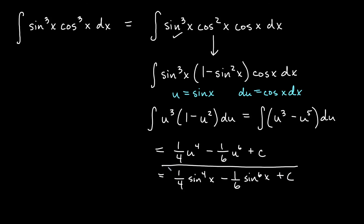So again on these problems, we save one copy for du. If we need to change anything to the other function — changing sines to cosines or cosines to sines — we use the Pythagorean identity. Then we use u-substitution, and everything becomes a nice power rule. Hopefully this helps you on odd powers of sine and cosine. Check out our video on even powers of sine and cosine to work on those. We'll catch you in the next one.